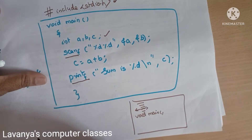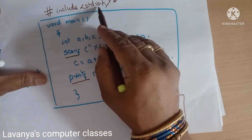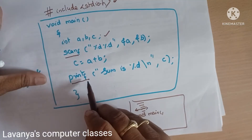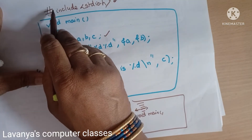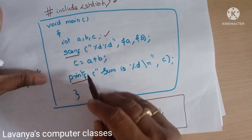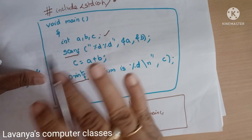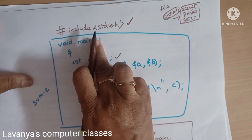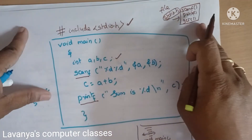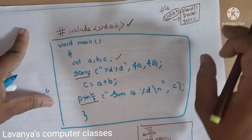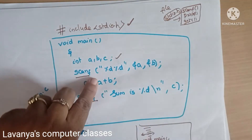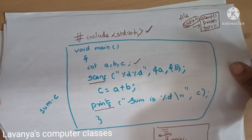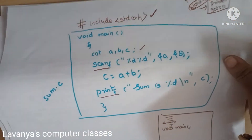Printf is the output command. We already did hash-include, so printf works. When we execute the program, scanf and printf work correctly. That is the meaning of hash-include stdio.h, and that is the working of pre-processor directives.